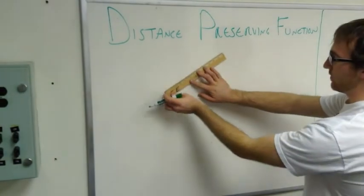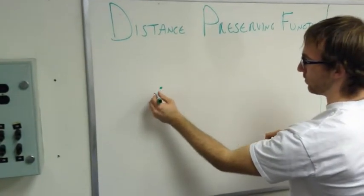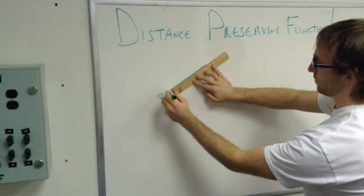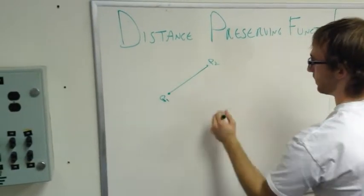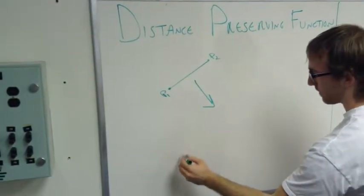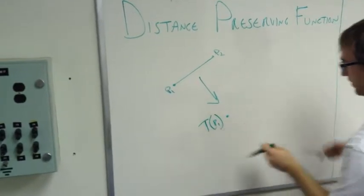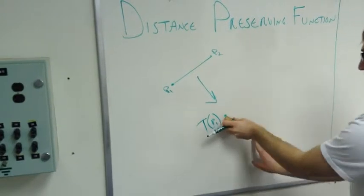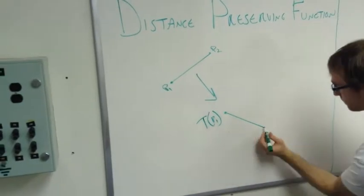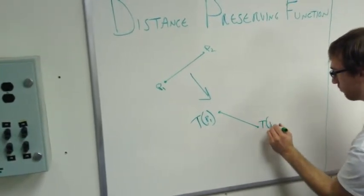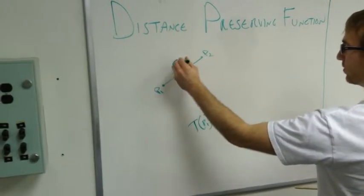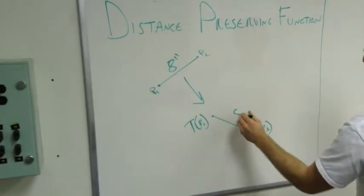If we have an initial distance from point one to point two of eight inches, then this undergoes a transformation — the transformation of point one, and then eight inches away, we'll have the transformation of point two. That is a distance-preserving function: the same distance of eight inches between the original two points and the transformation of the two points.